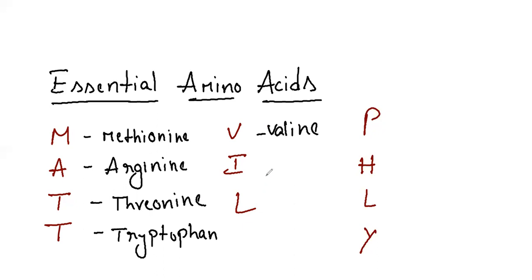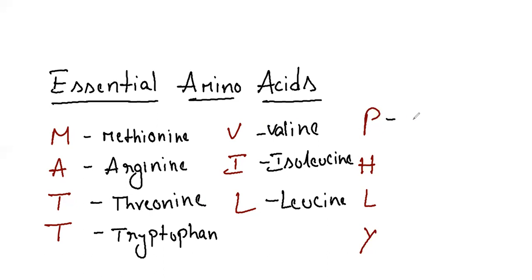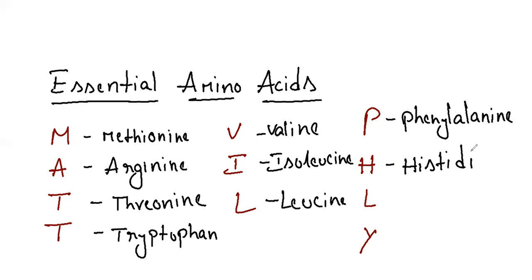And isoleucine as well as leucine. And P for phenylalanine, and H for histidine, and you have to combine this LY — lysine. So that's it about the essential amino acid mnemonic: Matt will fly.